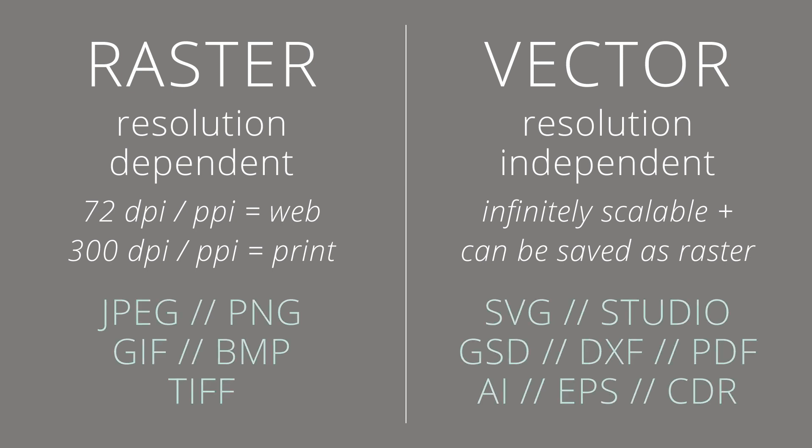Raster file types include JPEGs, PNGs, and GIF files, which are the most common, plus BMP files (which stands for bitmap) and TIFF files, which are less common but file types that you may come across from time to time. You can work with any of these types of files in Silhouette Studio.